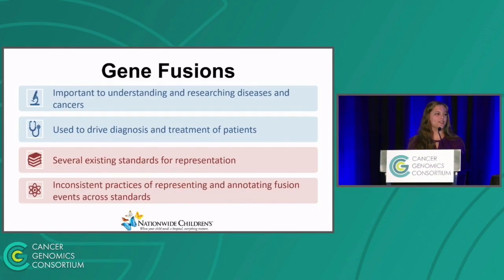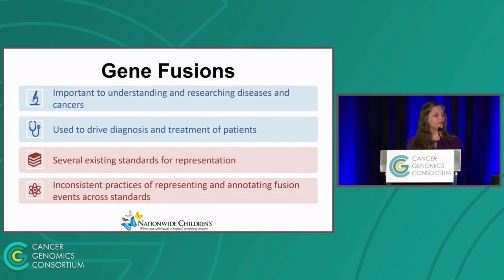So let's dive right into gene fusions. We're all at a cancer genomics conference, so we all know how important gene fusions are. We know that they're vital in understanding and researching diseases and cancers, and they're also used to drive diagnosis and treatment of patients. And because they're so important, there are several existing standards for representing them. This can lead to problems when we try to communicate with each other about these gene fusions because there are inconsistent practices in representing and annotating them.